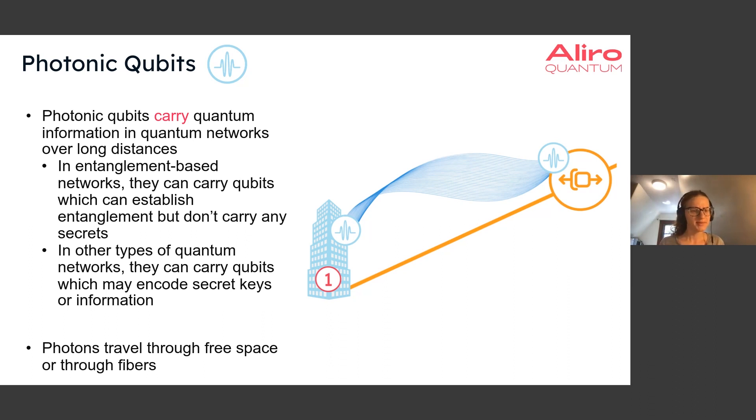Photons can travel through free space or travel through fibers. In our metro area network example, our photons will be traveling through fibers because, especially in a city setting, it's a little bit difficult to have a free space quantum network. You wouldn't want like a bird or a drone or something to fly in front of the photon and block it. It's a lot easier to just use fibers instead.